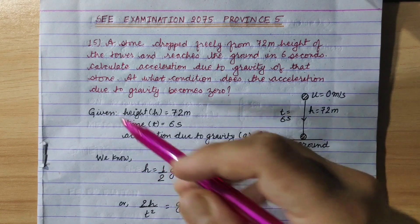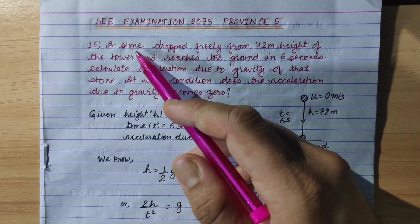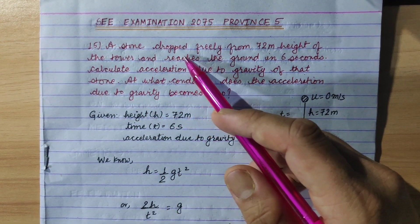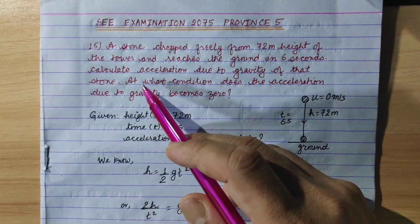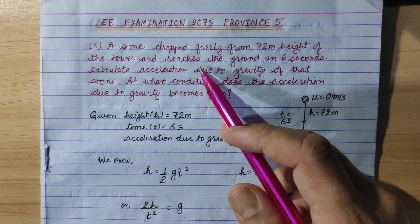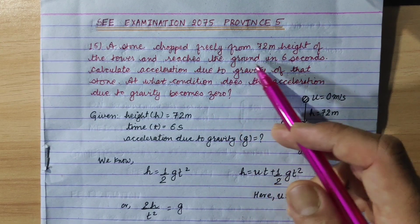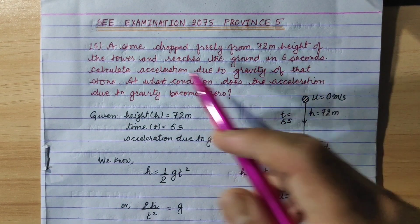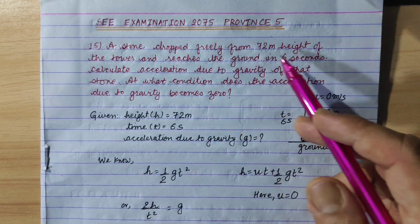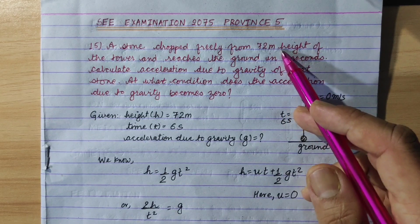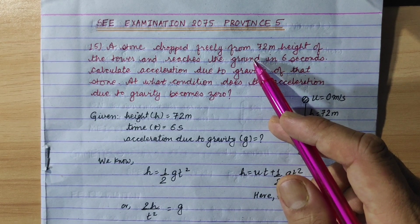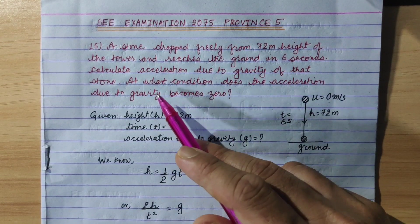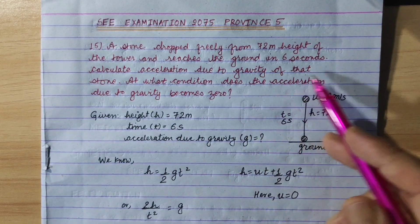Question 15. A stone dropped freely from a certain height of a tower reaches the ground in 6 seconds. Calculate the acceleration due to gravity of that stone.